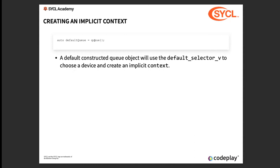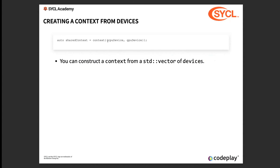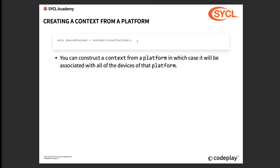Here's the creation of the implicit context. You have a queue, and from the queue you use default_selector_v to choose the device and from that device create an implicit context. Or if you want to be more explicit, you can pass a list of devices to the context constructor. If you want to put all the devices, it's a nice shortcut — it saves you from doing platform.getDevices() and passing that to the context. You can create a context for a platform, and all devices of that platform will be part of your context.